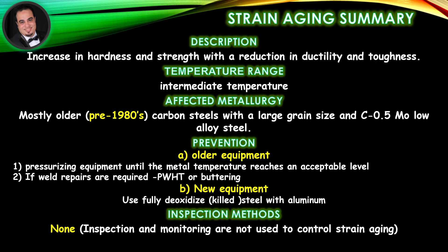Prevention — for older equipment: avoid pressurizing equipment until the metal temperature reaches an acceptable level; if weld repairs are required, apply PWHT or buttering. For new equipment: use fully deoxidized, killed steel with aluminum. Inspection methods: none — inspection and monitoring are not used to control strain aging.